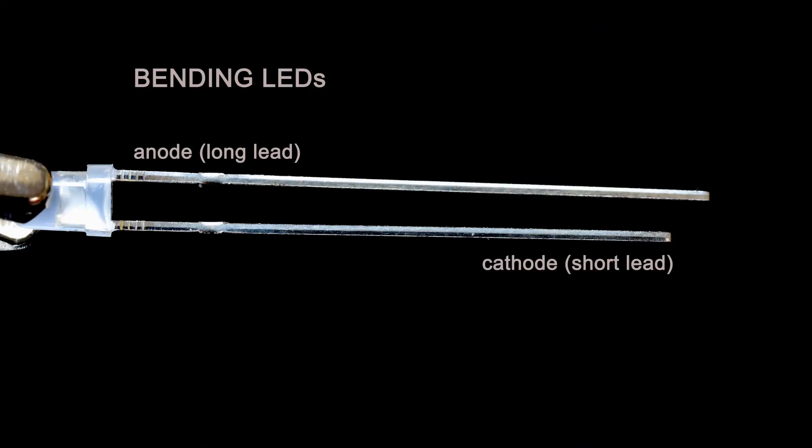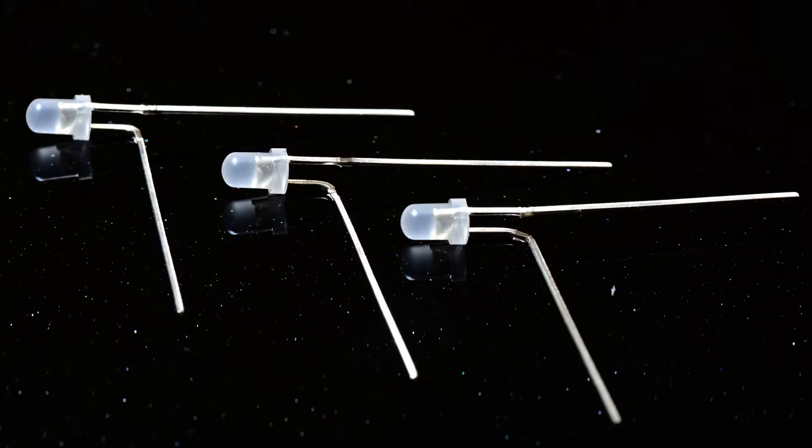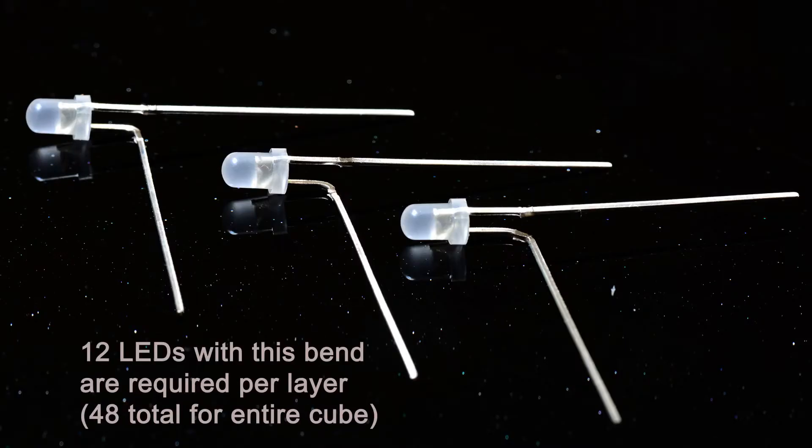Now we prepare the LEDs. All of the LEDs in this project will require that the anode be bent downward as shown. The back rows will require additional bends in the cathode as you will see later in this video.